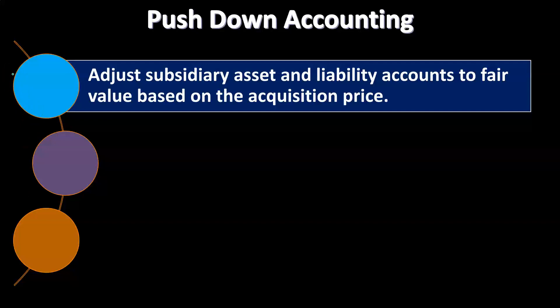This makes the most sense in a full purchase scenario. If the parent company purchased 100% of the stocks of the subsidiary for a price higher than book value, why not revalue the book value based on that fair market transaction? This makes the consolidation easier so we don't have to make that adjustment every time. Note that consolidation entries, unlike adjusting entries which are recorded at period-end, are typically not recorded on either company's books.